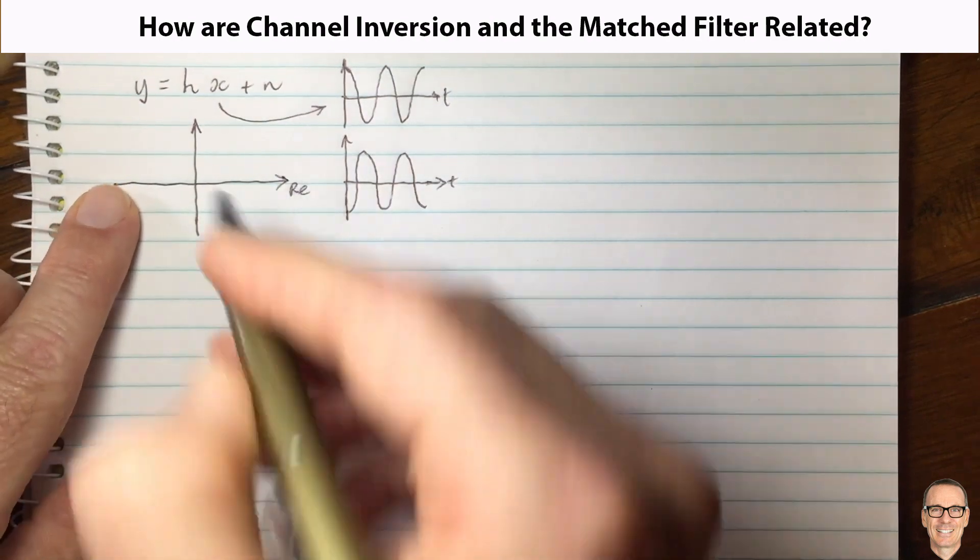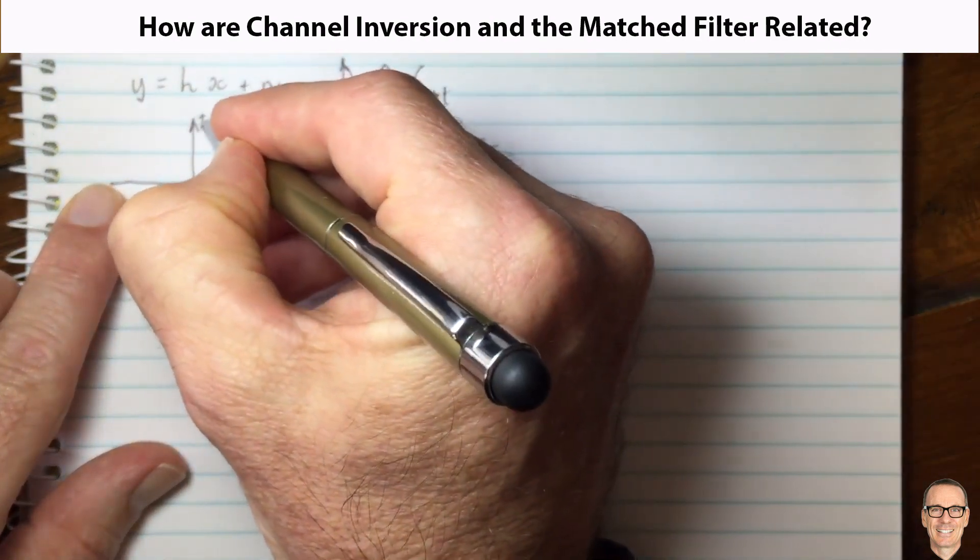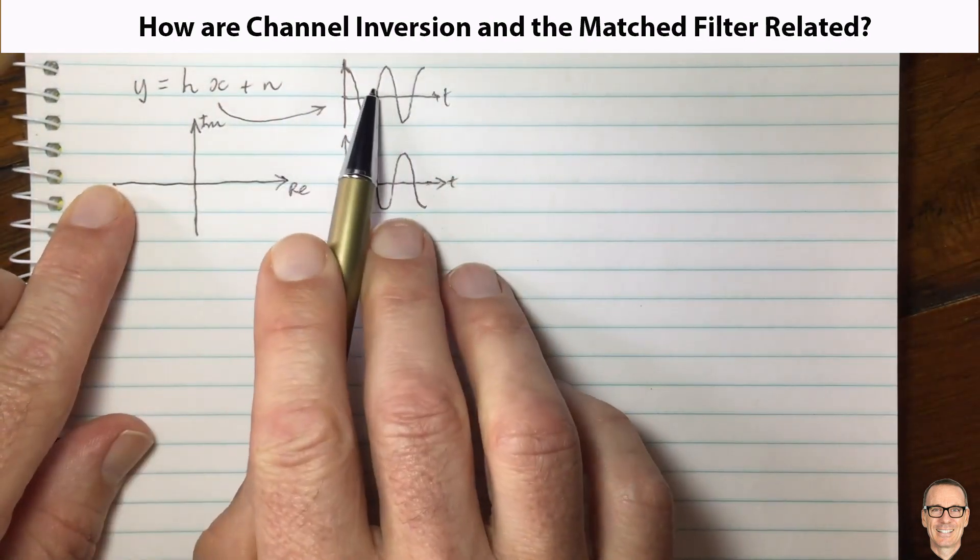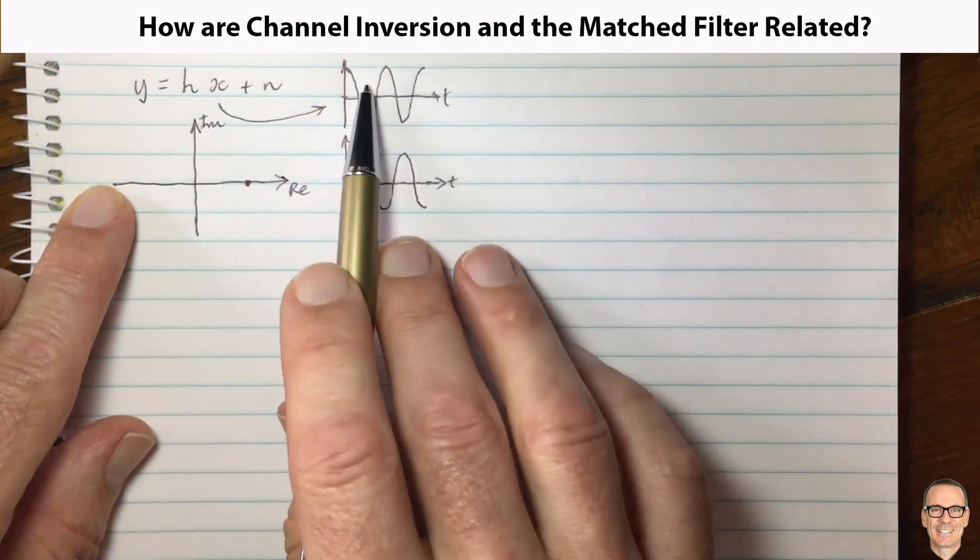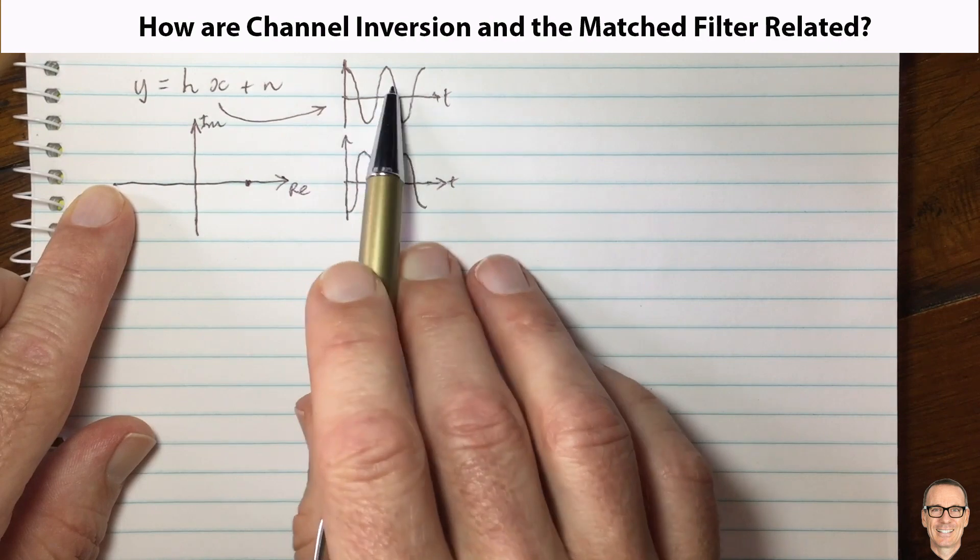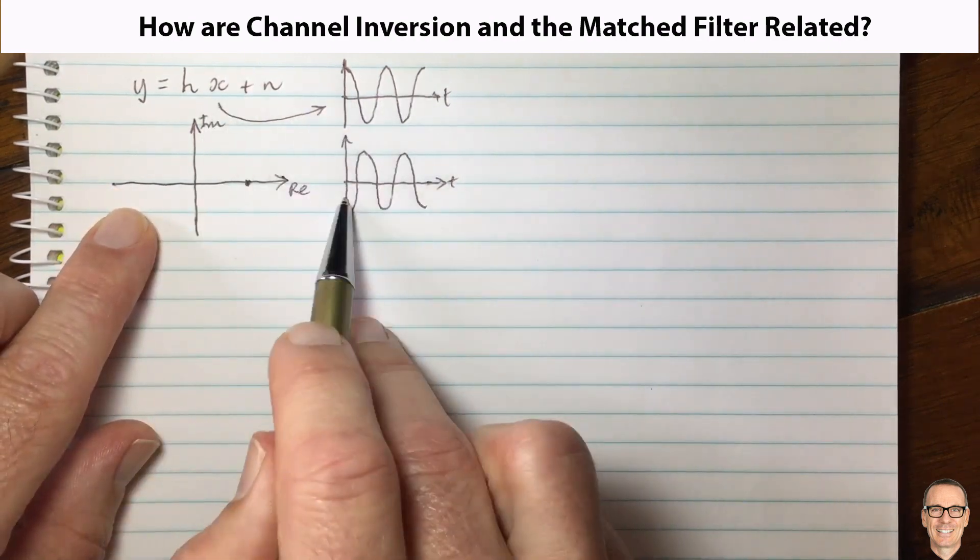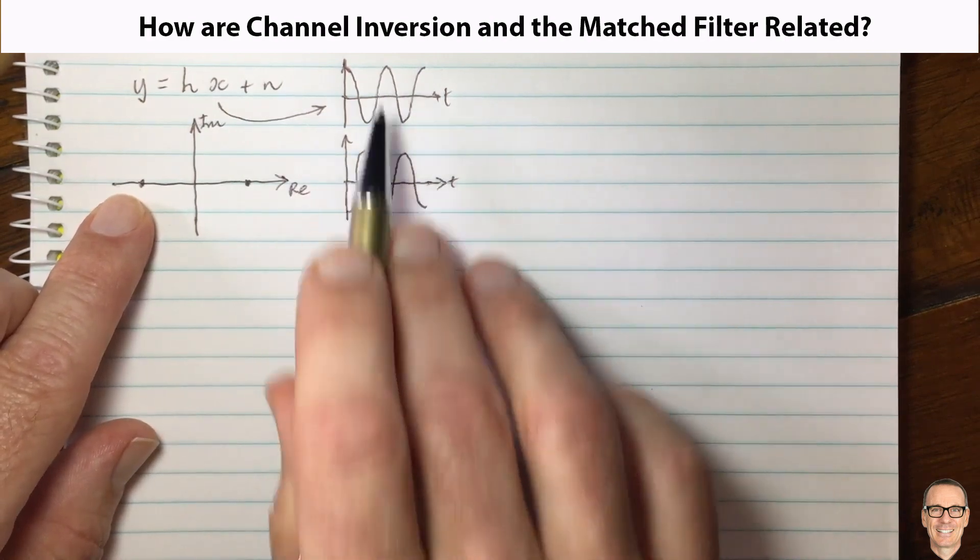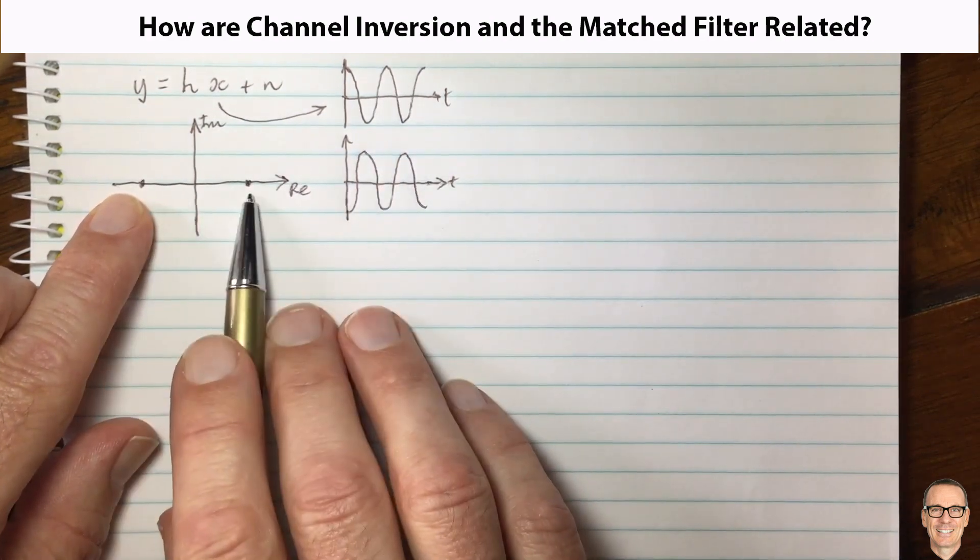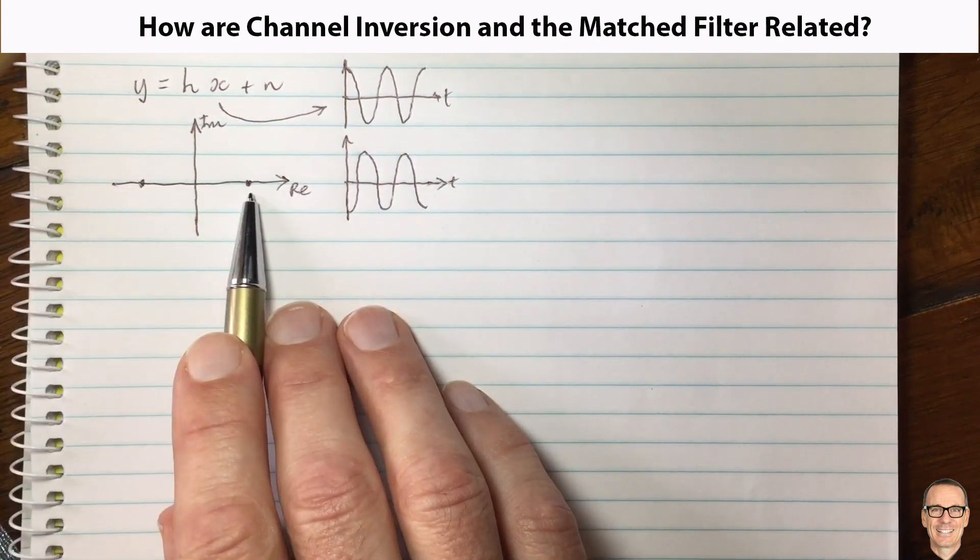The real represents the cos wave, the imaginary the sine wave. And in this case, this one would be over here with a plus one, because there's one component of the cos and no sine. And this one would be the negative one over here. So these are the waveforms you're sending, but this is how they're represented on the complex diagram.